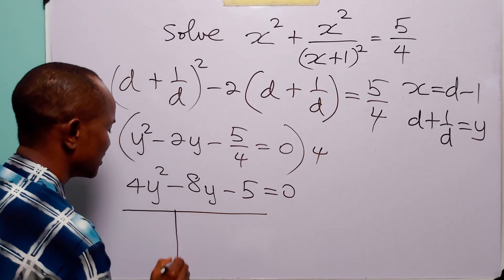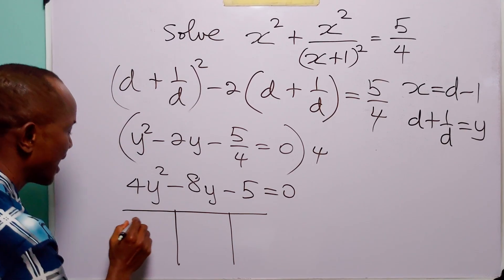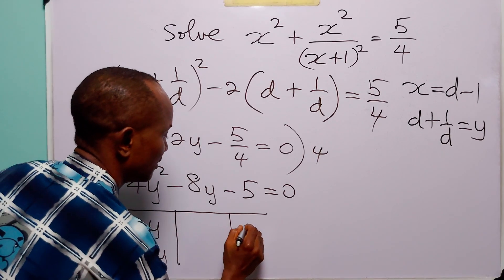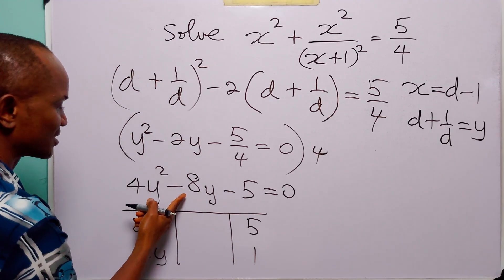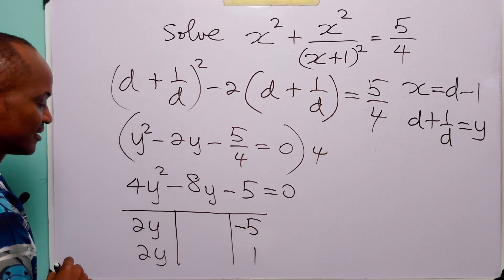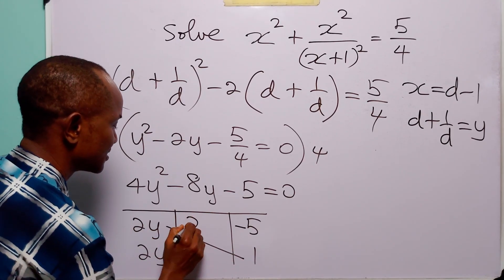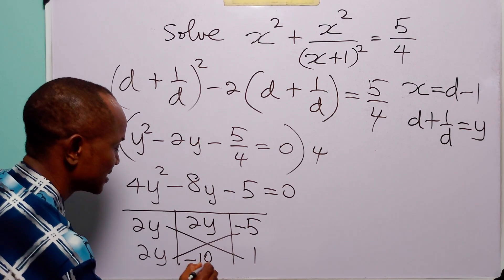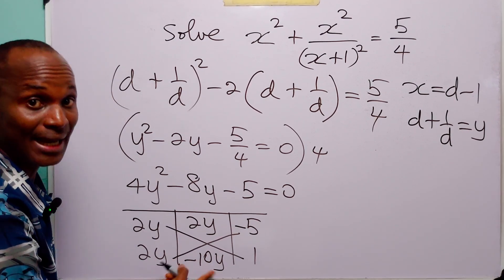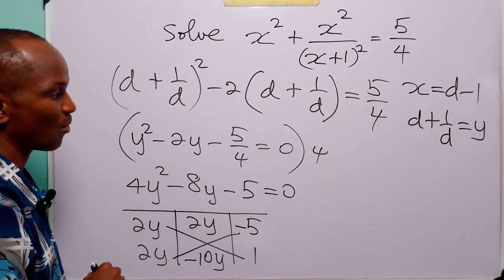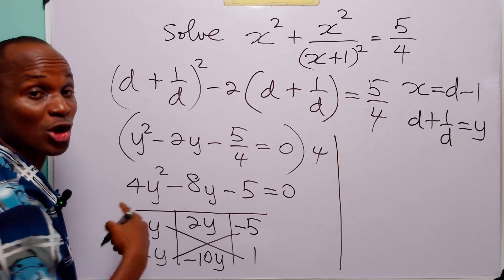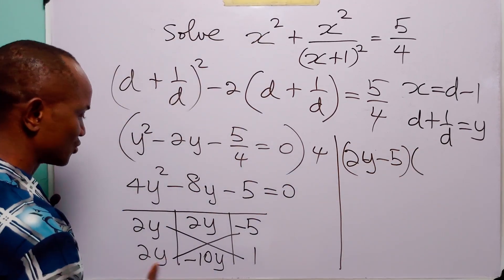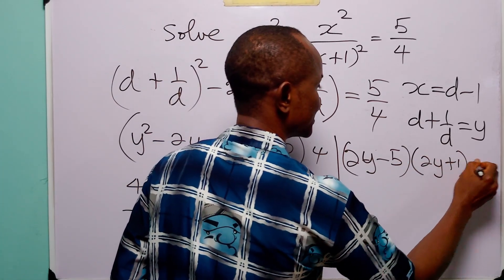We have 4y squared minus 8y minus 5 equals 0, and we can factorize this quadratic equation. The factors of 4y squared are 2y and 2y. The factors of minus 5 are minus 5 and 1. When we multiply 2y by 1 we get 2y, and 2y by minus 5 gives minus 10y. Since minus 10y plus 2y gives minus 8y, this quadratic factors as 2y minus 5 multiplied by 2y plus 1 equals 0.